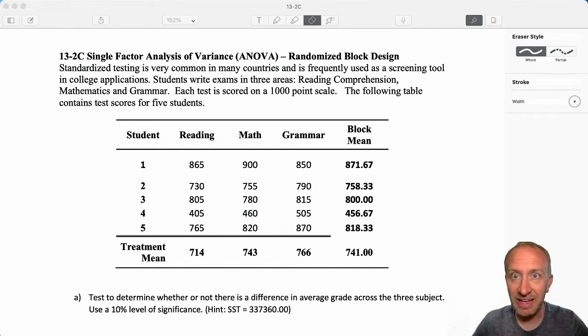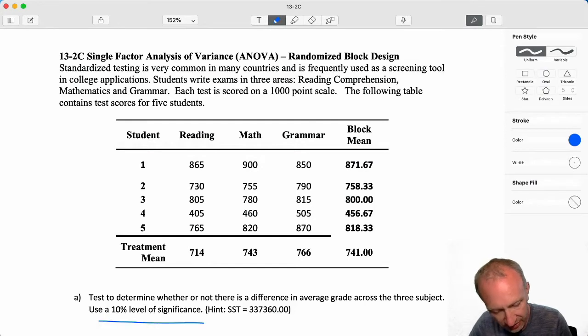Standardized testing is very common in many countries and is frequently used as a screening tool in college applications. Students write exams in three areas: reading comprehension, mathematics, and grammar. Each test is scored on a 1,000 point scale. The following table contains test scores for five students and here we want to test to determine whether there is a difference in average grade across the three subjects. We're going to use a 10% level of significance.